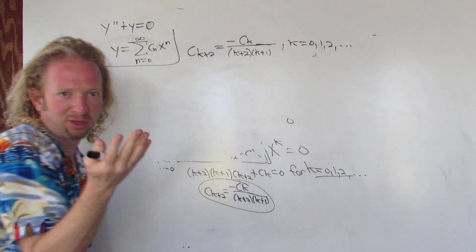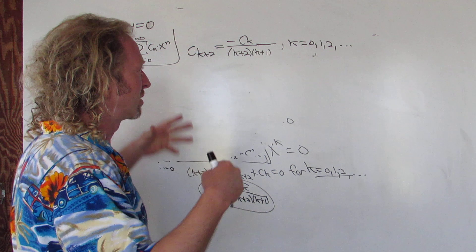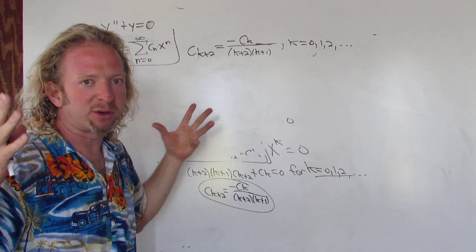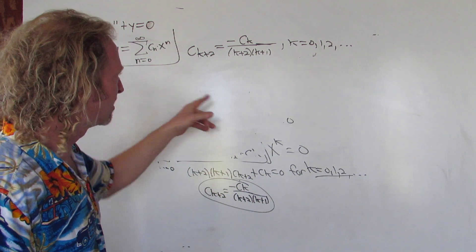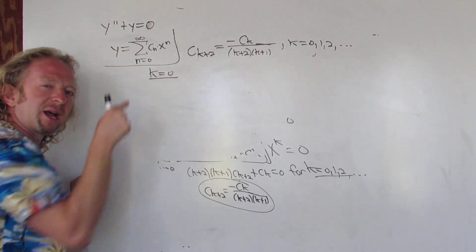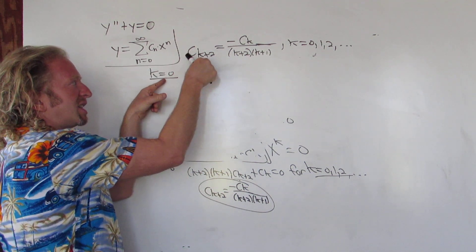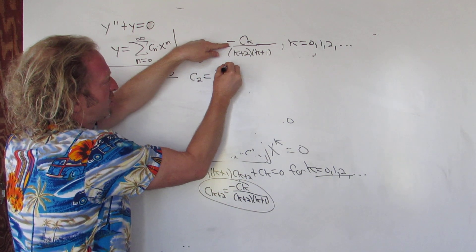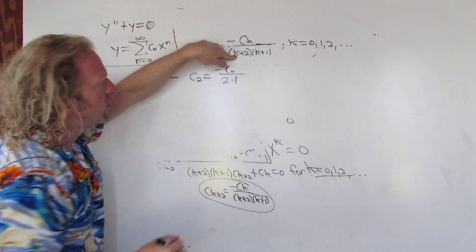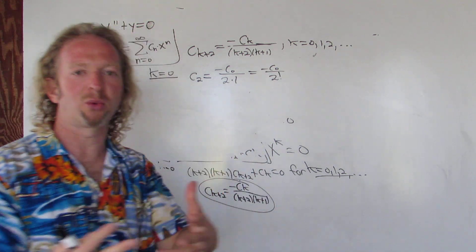Some people call this a recurrence relation. We're going to use it now to get the answer. There are two approaches — the direct approach, where we just plug in numbers and look for a pattern, which is what we'll do here. So the first number we plug in is k equals 0. It's a good idea to write it down so you don't mess up. Always be on the lookout for patterns when working with these problems.